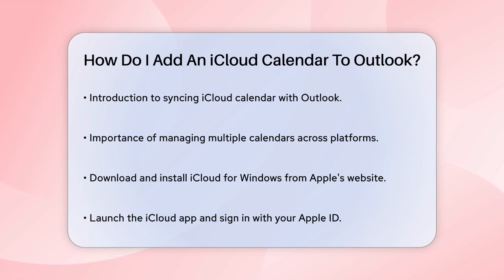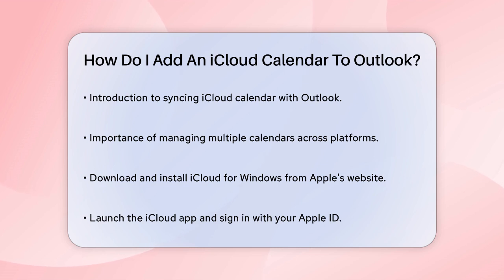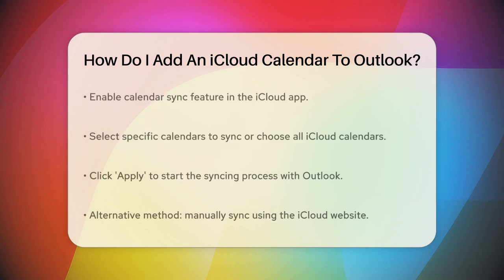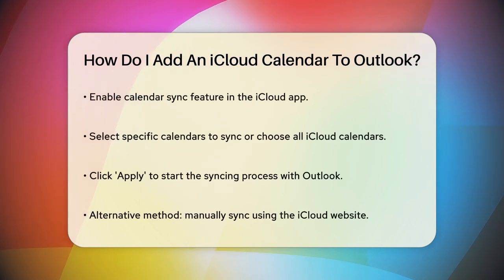First, let's talk about using the iCloud app. If you're on a Windows PC, you'll need to download and install the iCloud for Windows application from Apple's website. Once installed, launch the app and sign in with your Apple ID. In the app, you'll see options to sync your contacts, emails, calendar, and tasks with Outlook. Make sure to enable the calendar sync feature.